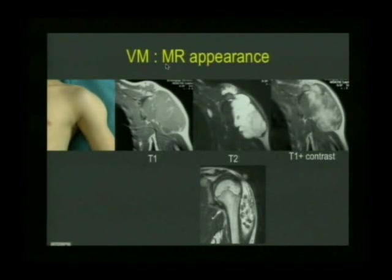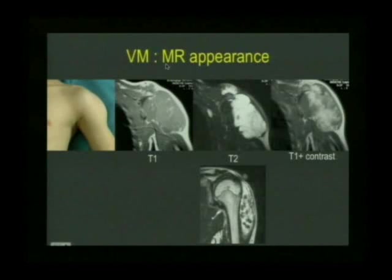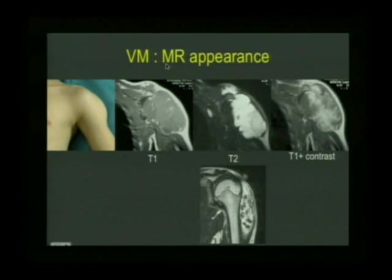On T2, it's hyper-intense. T1 following contrast shows contrast enhancement within the lesion, but it's usually non-uniform. You don't get uniformity in the contrast enhancement, which is quite different to the proliferative infantile hemangiomas. There's a little telltale sign of a signal void on the T2, and this is a phlebolith.